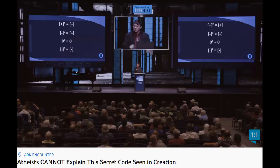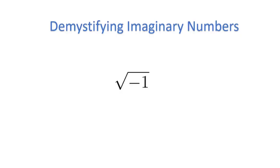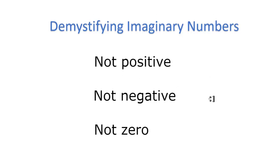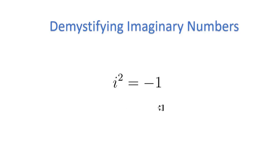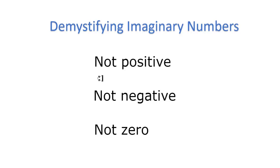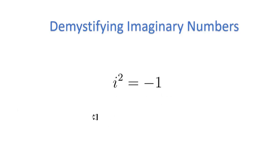You gain a little experience and you find, yes, there are numbers that when you square them, you get a negative. But they're not positive, they're not negative, and they're not zero. So how do we make sense of imaginary numbers? Since the square root of negative one doesn't have a real solution, we assign it the letter i for imaginary, and we accept that i equals the square root of negative one. Alternatively, i squared is equal to negative one. When you square i, you get negative one.